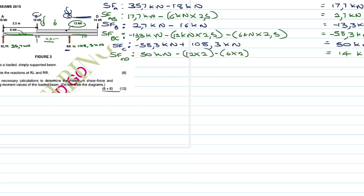For the shear force at point D, we take the previous result of 14 kN and subtract the downward load at D of 14 kN. So: 14 minus 14 = 0 kN. The maximum shear force in this question is −58.3 kN — even though it's negative, it has the highest magnitude and is therefore the maximum shear force.